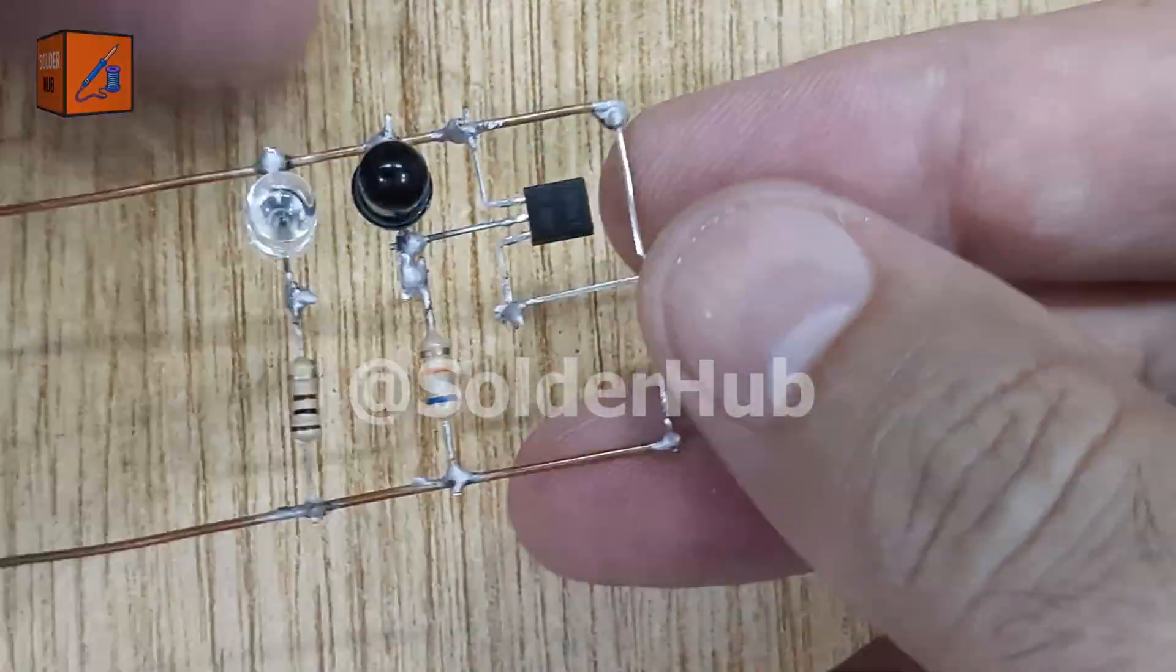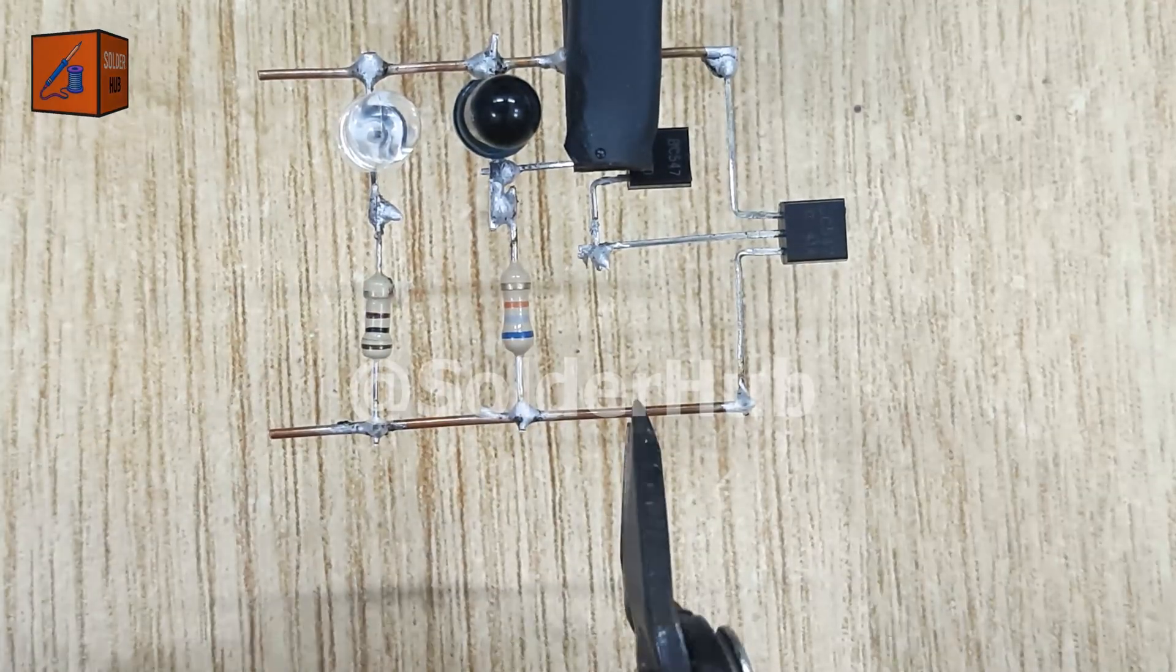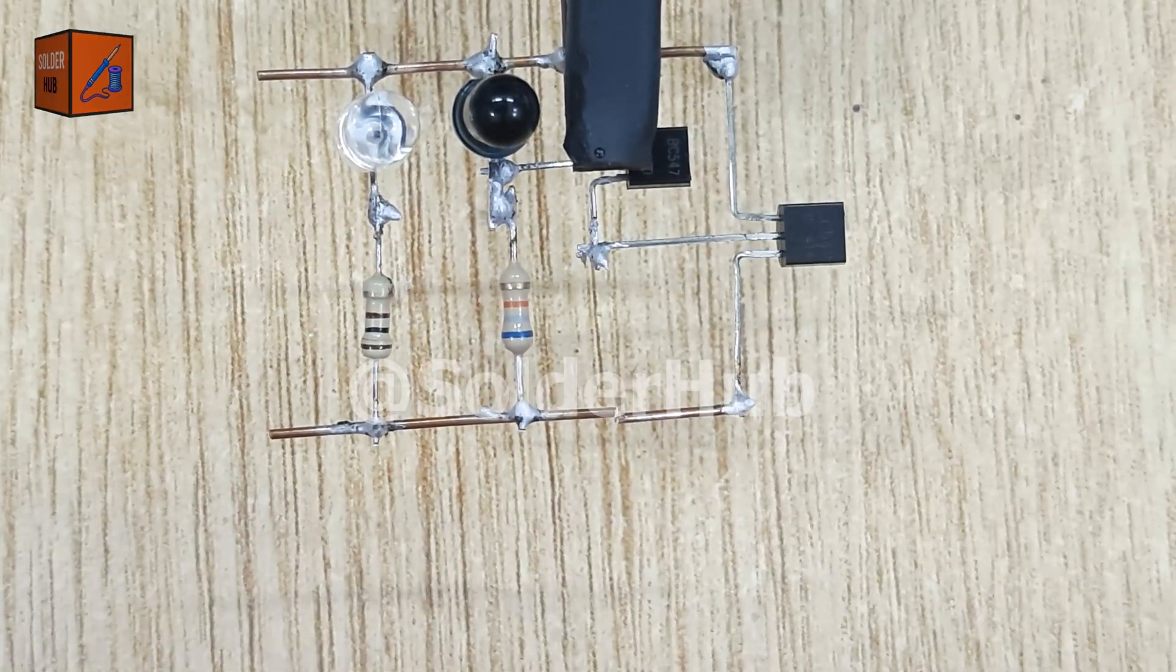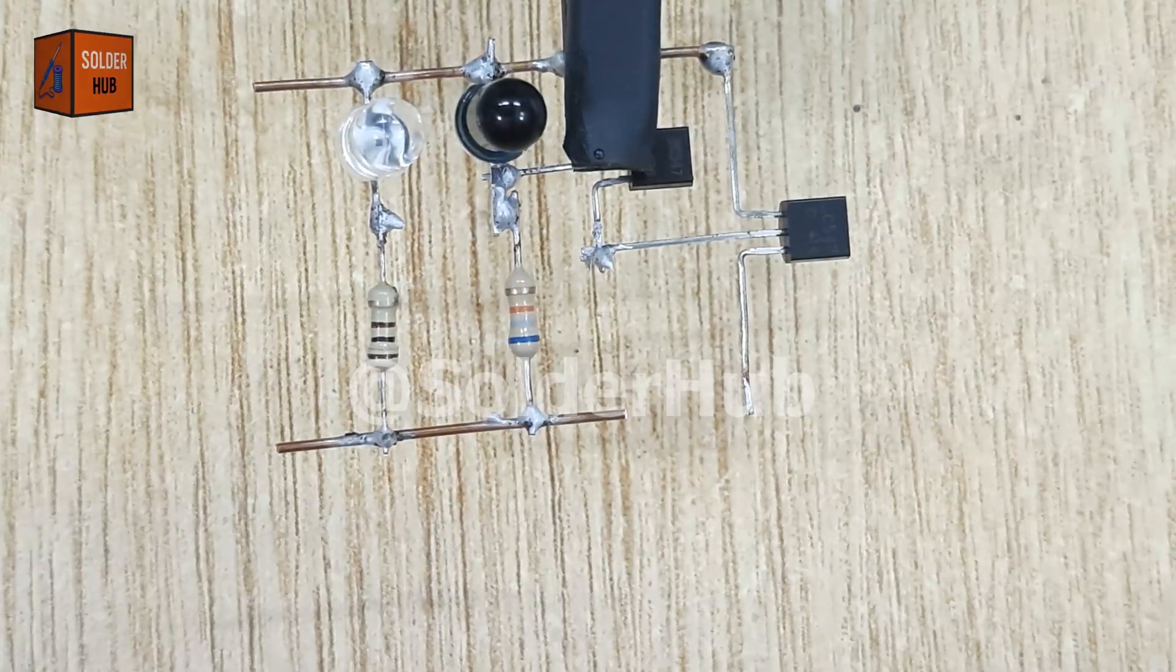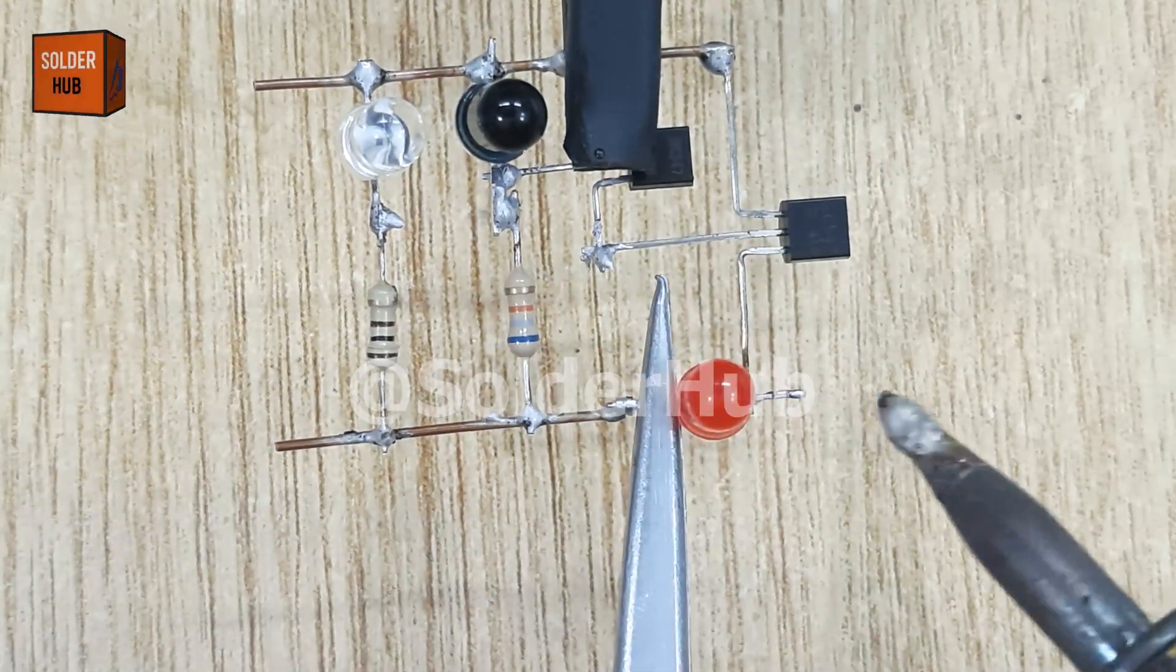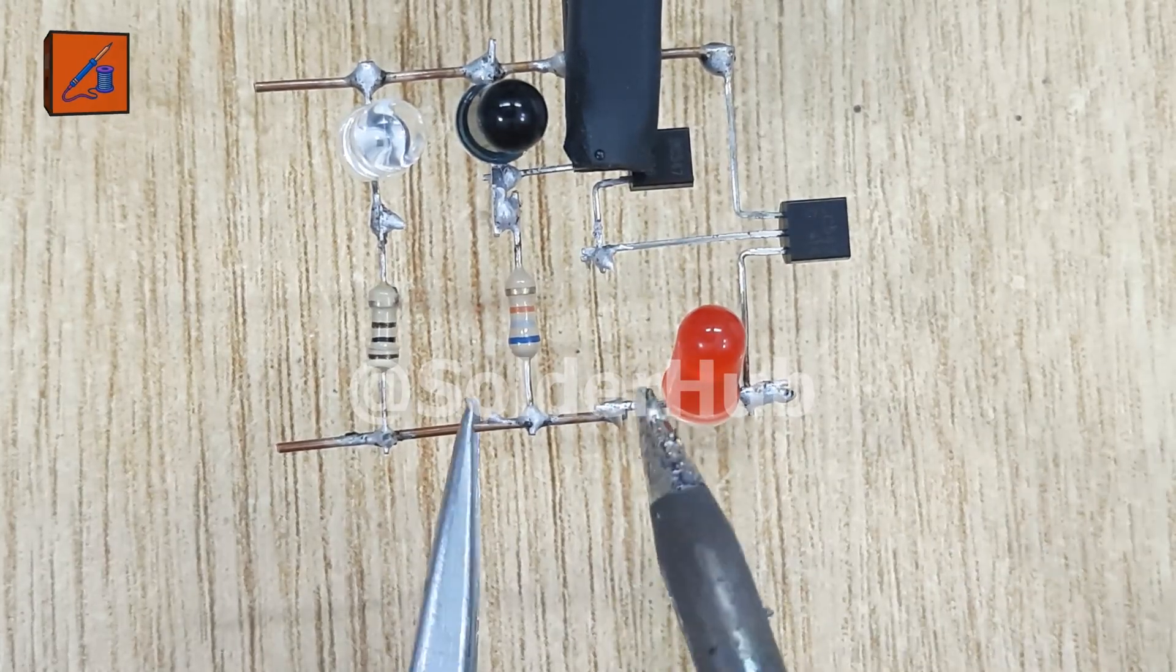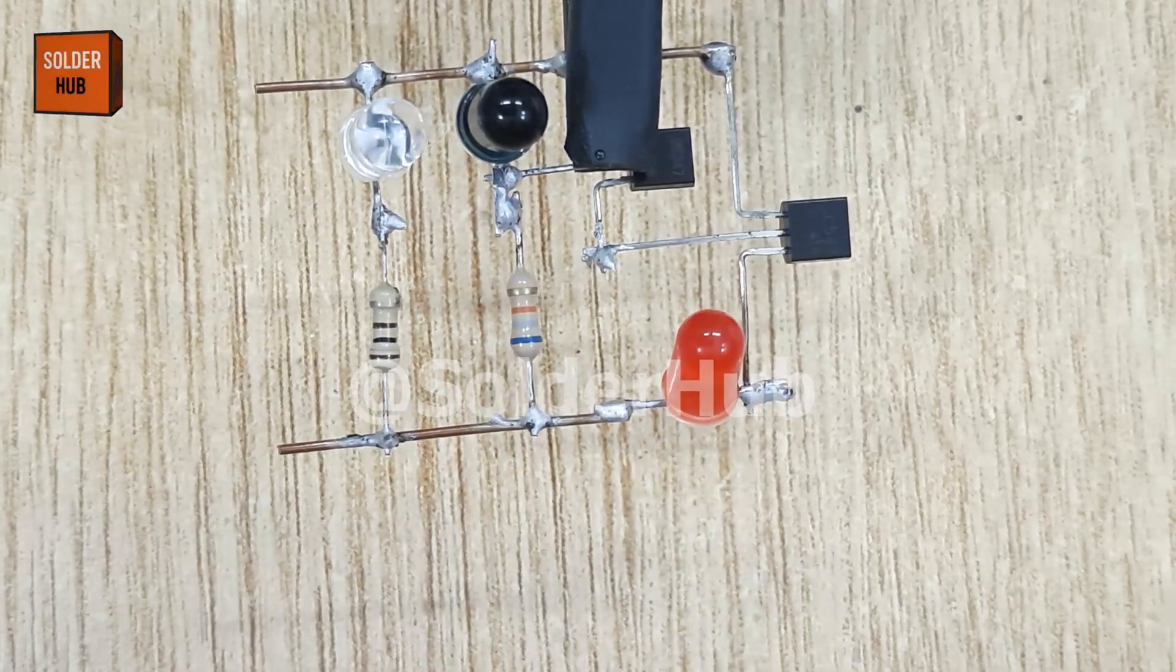After making these connections, I'll trim the copper wires to make the circuit neat and compact. Now, I'll cut one section of the copper wire near the first transistor to make space for the LED indicator. I'll solder the positive pin to the emitter pin of the transistor and the negative pin to the copper wire. This LED will glow whenever the sensor detects an obstacle.